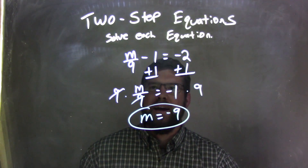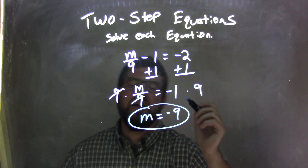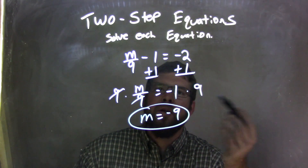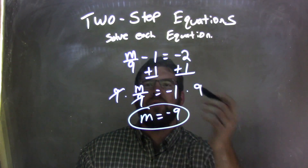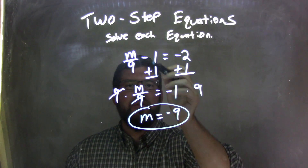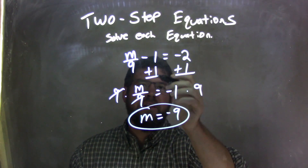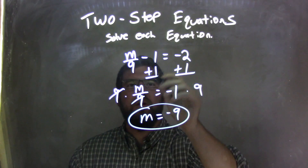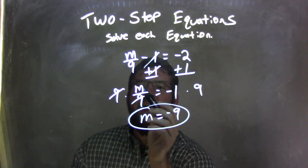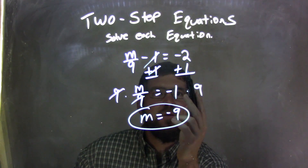So let's recap. We start with m over 9 minus 1 equals negative 2. I'm going to add a 1 to both sides — the opposite of minus 1 is adding a 1. Add a 1 to both sides, and the 1 is canceled here.